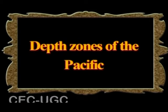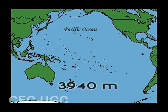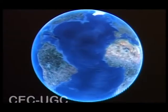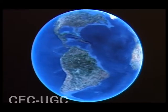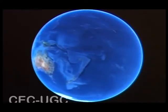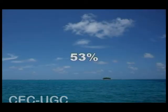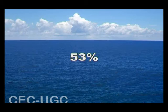The depth zones of the Pacific are very unique features. The Pacific is the deepest ocean in the world, with an average depth of 3,940 meters. Its mean depth is also the greatest among the three major oceans of the world. The total volume of water existing in the Pacific is about 53 percent of the total volume of all the oceans put together.